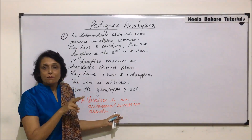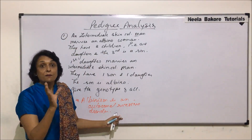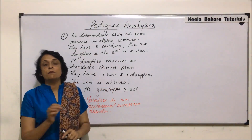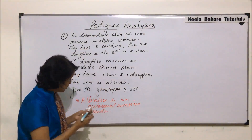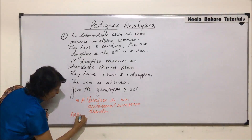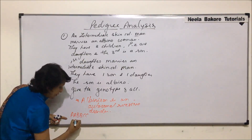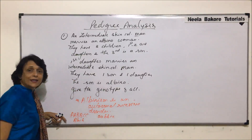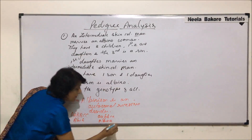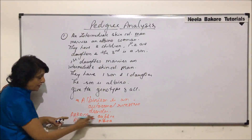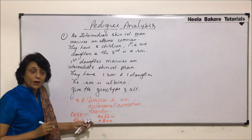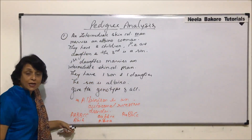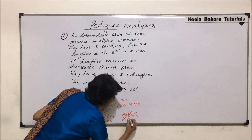If you remember, we wrote them as capital A, capital A, capital B, capital B, capital C, capital C — that means all six dominant, where maximum melanin production takes place. And all recessive means there is no melanin production, resulting in albino formation. So homozygous for all three genes was called black — maximum pigment production — and all recessive was called albino. For intermediate, we took three dominant alleles and three recessive alleles, so heterozygous A, heterozygous B, and heterozygous C representing the intermediate.